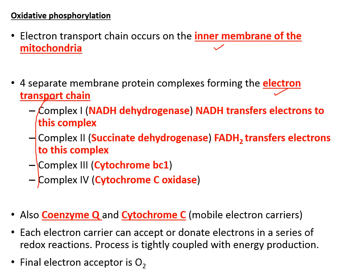These protein complexes are known as complex 1, 2, 3, and 4. You don't have to memorize their names but you need to know their functions. Complex 1 receives electrons from NADH, complex 2 receives electrons from FADH2, and complexes 3 and 4 receive electrons from the previous complexes.